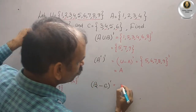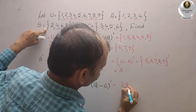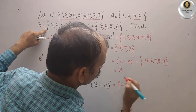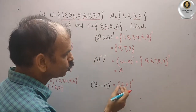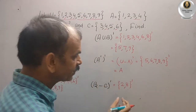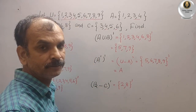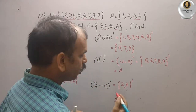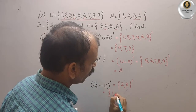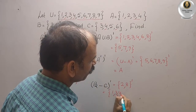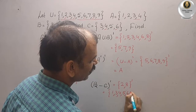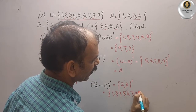Now we take the complement of {2, 8}. That means U minus {2, 8}. The remaining elements are {1, 3, 4, 5, 6, 7, 9}. So (B minus C)' = {1, 3, 4, 5, 6, 7, 9}.